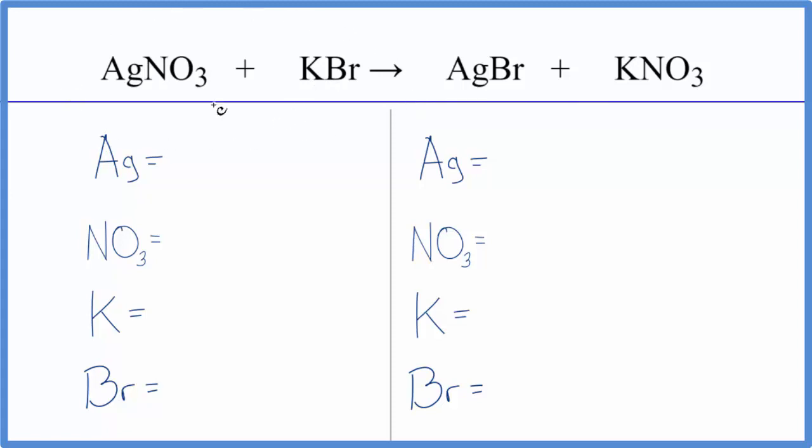This is a double displacement reaction. The Ag and the K switch places, so you get AgBr and then KNO3. This is double displacement, and this AgBr should fall to the bottom of the test tube as a precipitate.